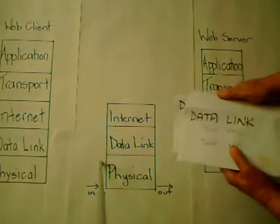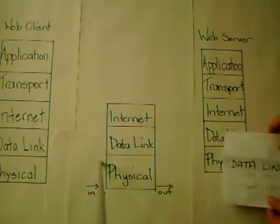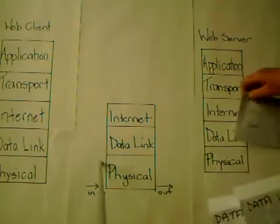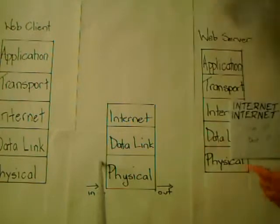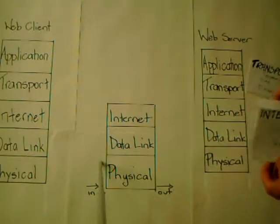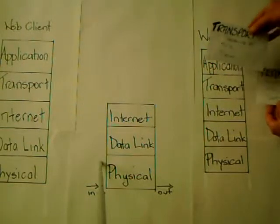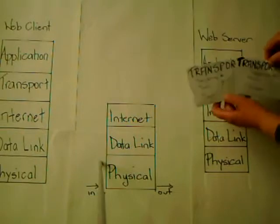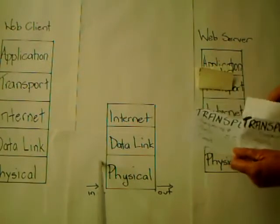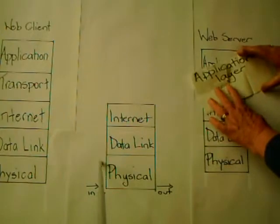These become data link layer frames sent down to the physical layer of the router, which sends them out across the physical media. They're received by the server's physical layer and sent up to the data link layer where they are de-encapsulated, then up to the internet layer where IP addresses are checked. De-encapsulation occurs again, and the transport layer checks the sequence numbers to put segments into the correct order — sequence one and sequence two — joining them into one complete message, which is then forwarded up to the application layer of the web server.